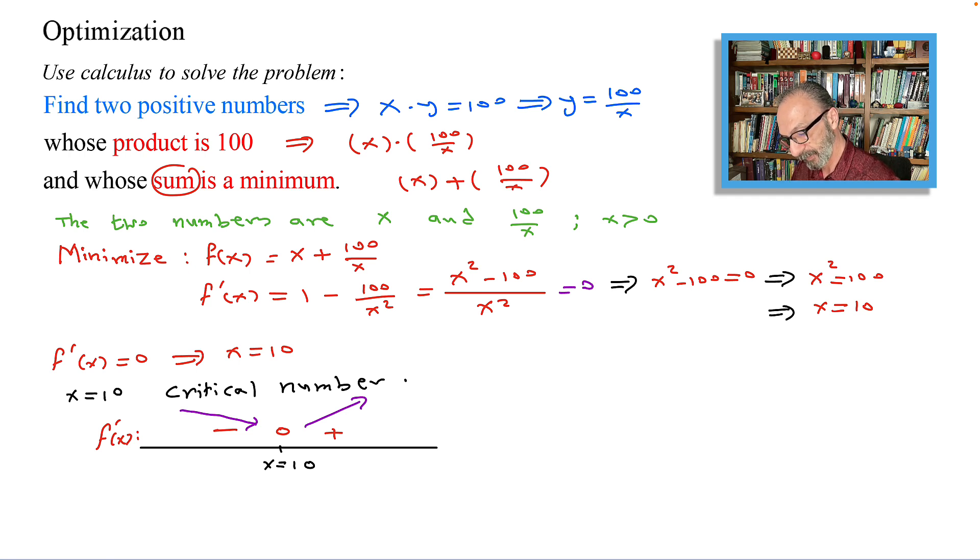Meaning we have f prime of x is less than 0 on the interval 0 to 10, and f prime of x is greater than 0 when x is greater than 10. That is decreasing and that is increasing. Therefore, there is an absolute minimum.